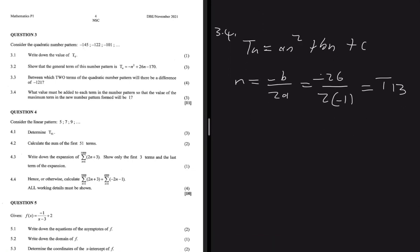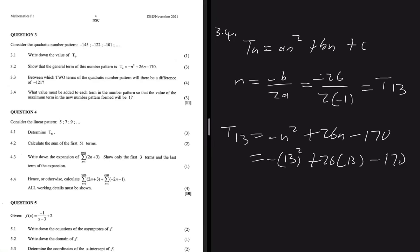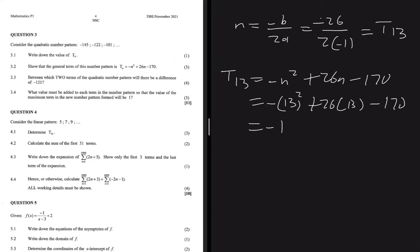We need the value of T13 to know what to add to get 1. T13 equals minus 13 squared plus 26 times 13 minus 170, which gives minus 1. So which number do we add to minus 1 to get 1? Clearly the answer is 2. If we add 2 to each term, the value of the maximum term in the new sequence will be 1.